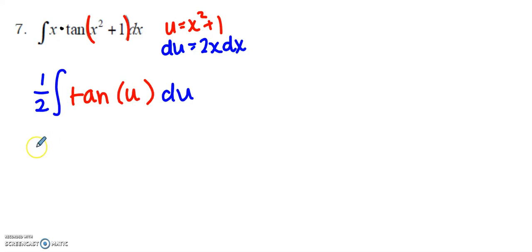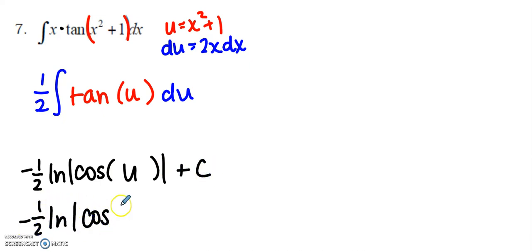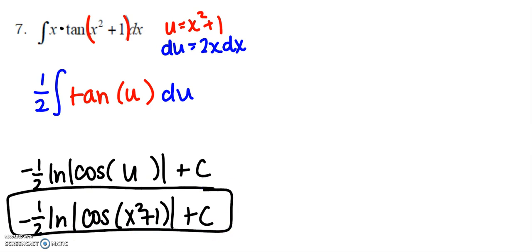I either have memorized my rules and I know that this will become negative the natural log of the absolute value of cosine of x² plus C, and then I can go back and plug in my u value. I could check that by taking the derivative.